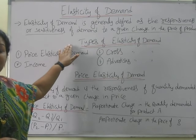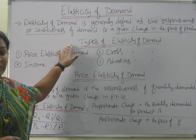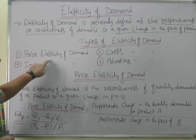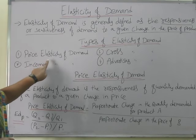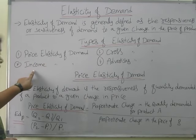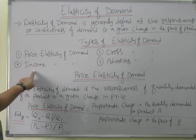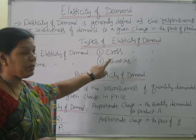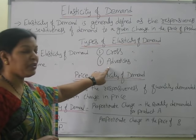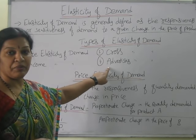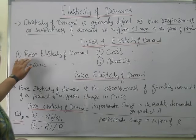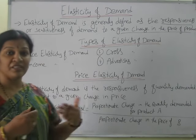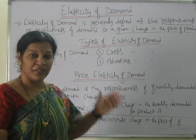There are different types of elasticity of demand. One is price elasticity of demand, income elasticity of demand, cross elasticity of demand, and advertising elasticity of demand. We will discuss price elasticity of demand in depth, and the second, third, and fourth are quite easy to understand.